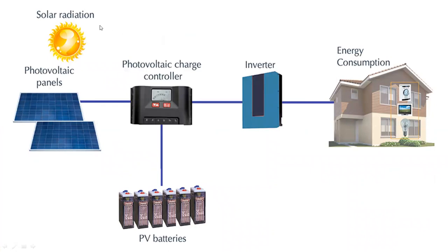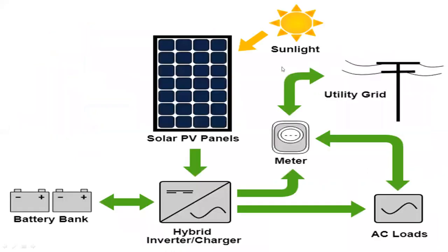In another form of representation, solar radiation goes to photovoltaic panels. The panels connect to a photovoltaic charge controller, which plays a very important role. Then we have PV batteries, and the output is given to an inverter for energy consumption. Alternatively, the panels connect to a charge converter and the output is either stored or directly given through a meter to connect to the grid, while an inverter enables AC loads.